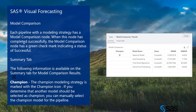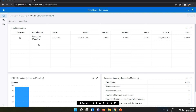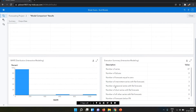The champion modeling strategy is marked with the champion icon. If you determine another model should be the champion, you can manually select it. For example, you could select auto forecasting as champion. The summary also shows status, WMAE, WMAPE, WMASE, and WRMSE metrics for each model.